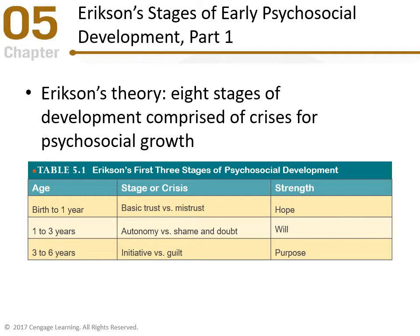Stage one is birth to one year — basic trust versus mistrust. An eight-month-old cries because their mom is gone because they trust their mom; they don't know the stranger, so that's mistrust. The strength that emerges is hope. When needs are consistently met — feeding, diaper changes — the baby develops trust and a sense that things are going to go right, which brings hope.